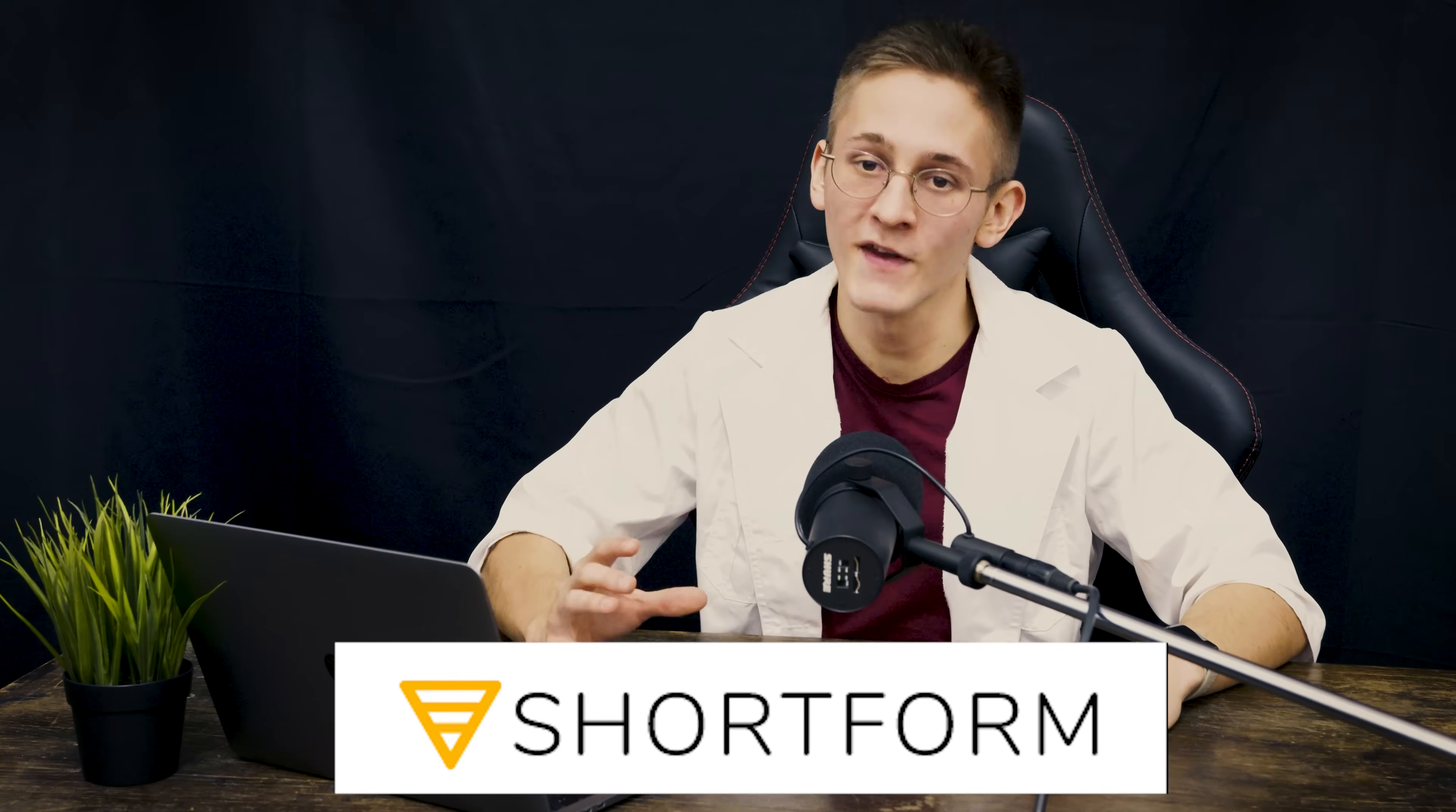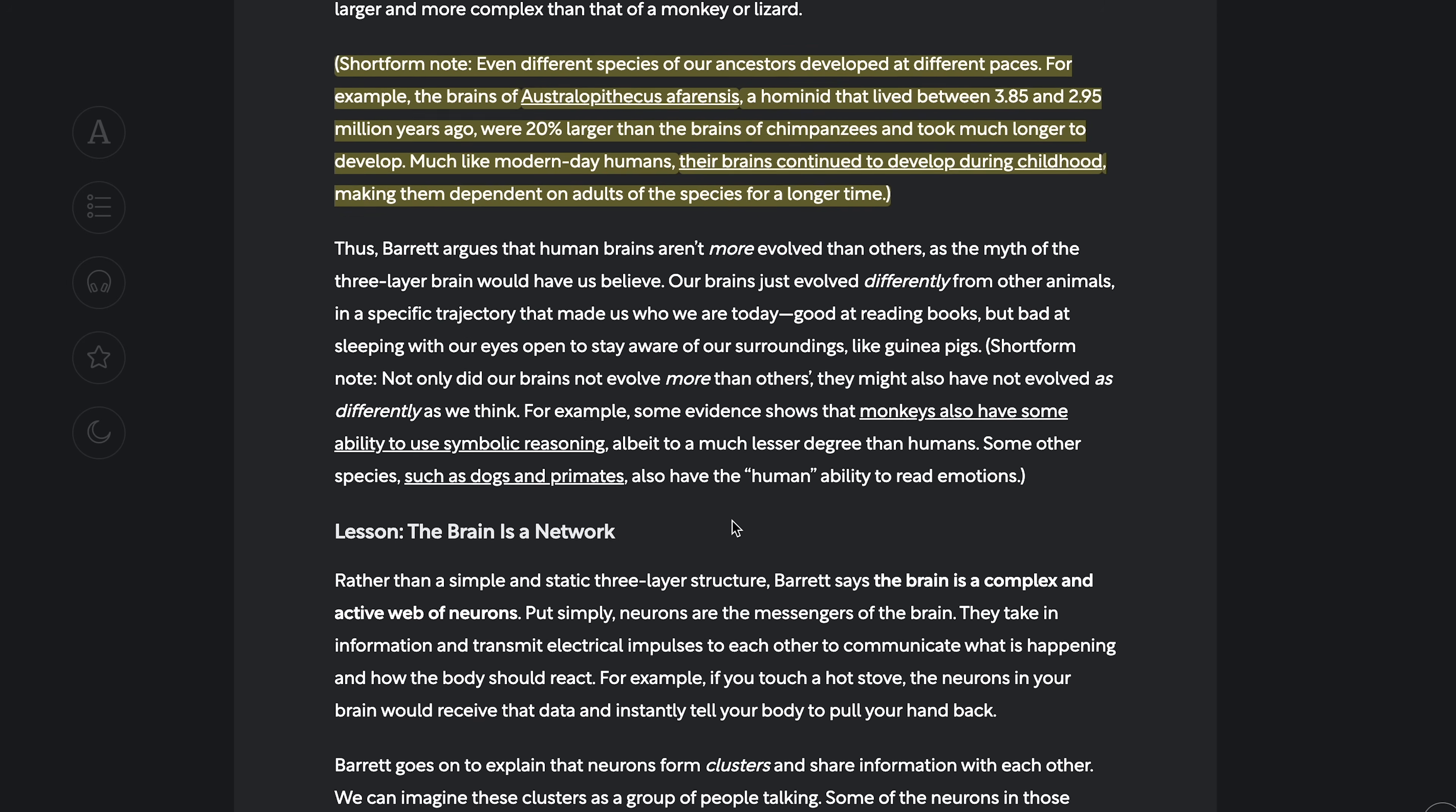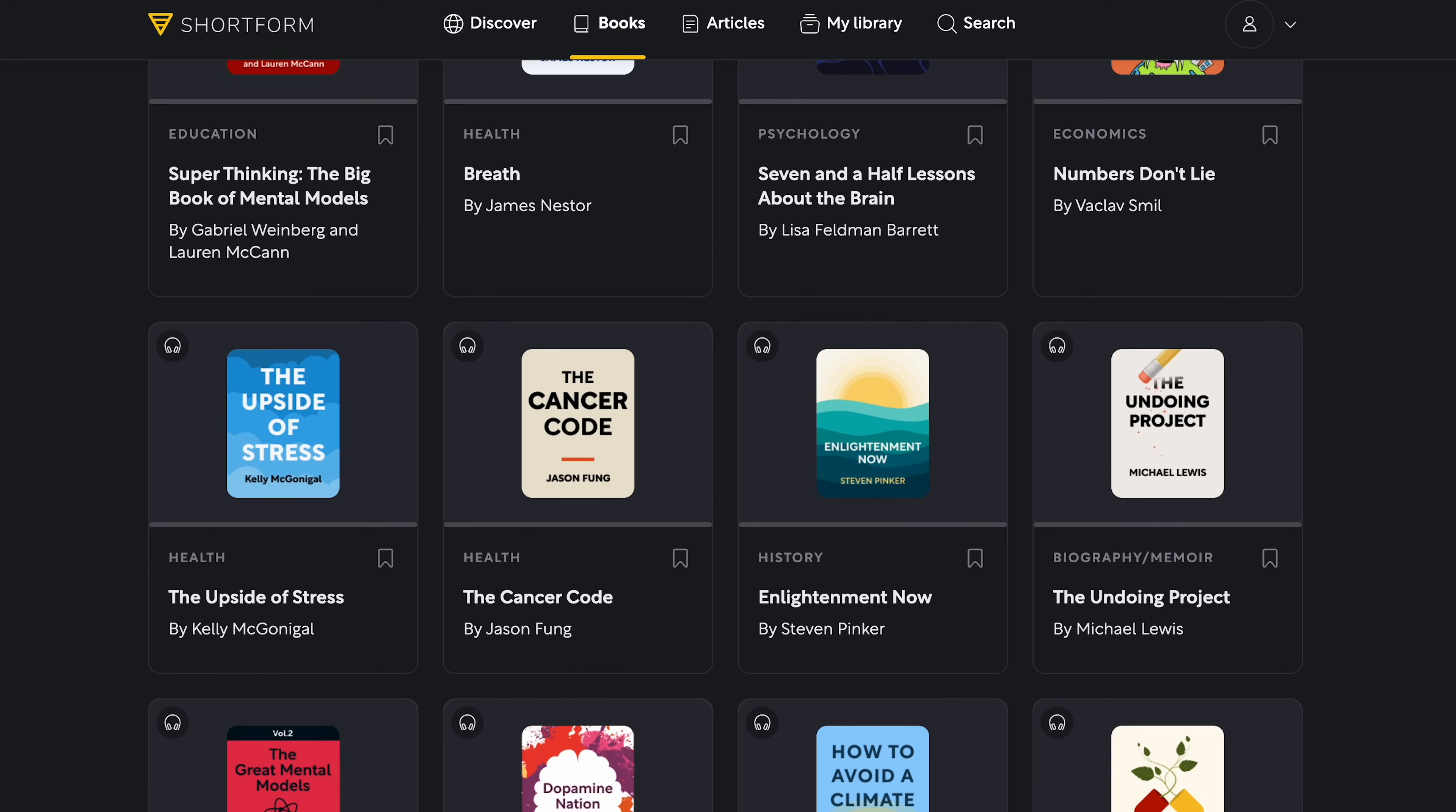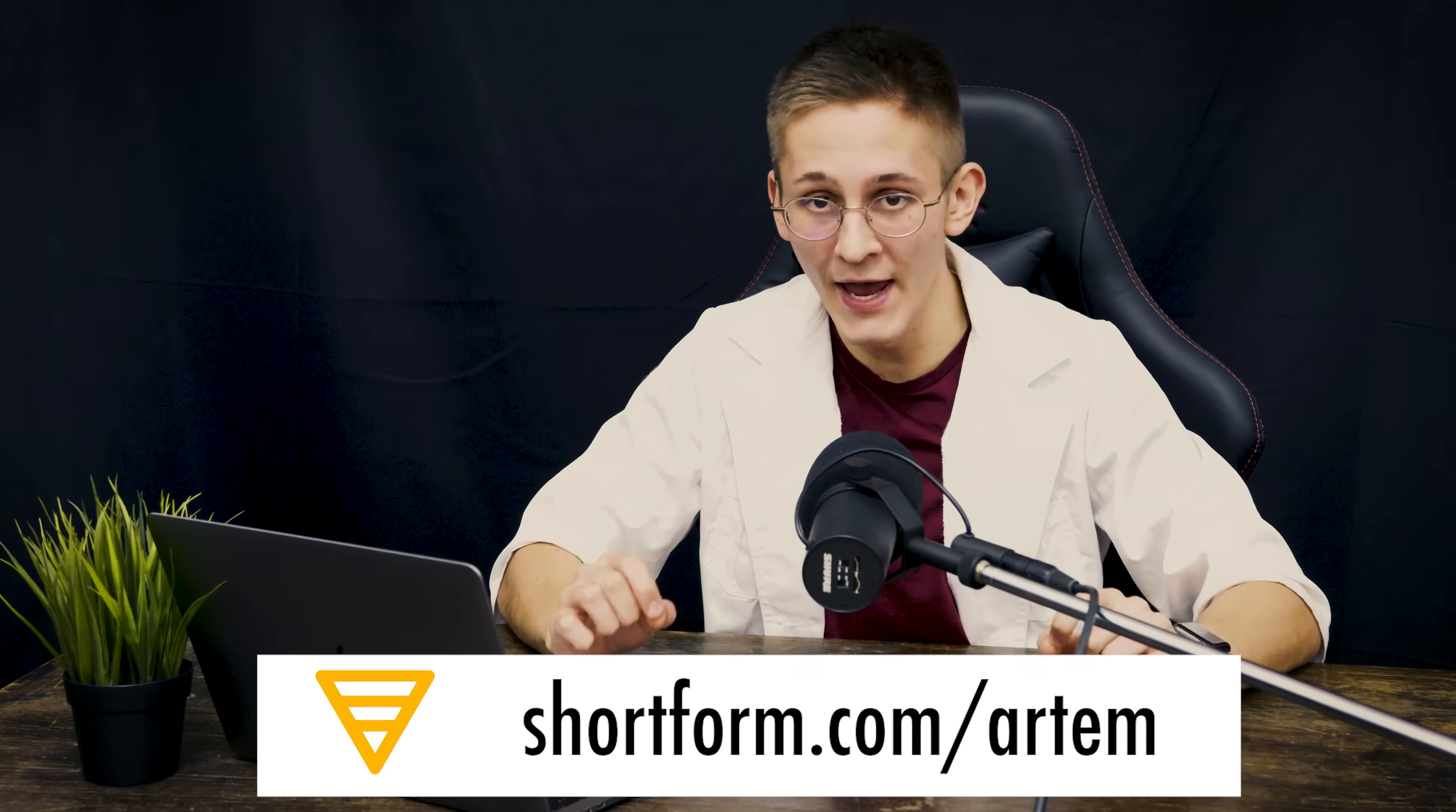Shortform is a platform which makes discovering and reading books much easier. They offer book guides or supercharged book summaries supplemented by related ideas from other sources. I believe this feature is a game-changer because it allows you to get a more comprehensive perspective and promotes interlinking of different ideas. The existing library of books is quite impressive, covering a variety of genres, including science, technology and psychology. Additionally, new guides are being published every week. Don't hesitate to try Shortform by following the link down in the description to get 5 days of unlimited access and 20% discount on annual membership.